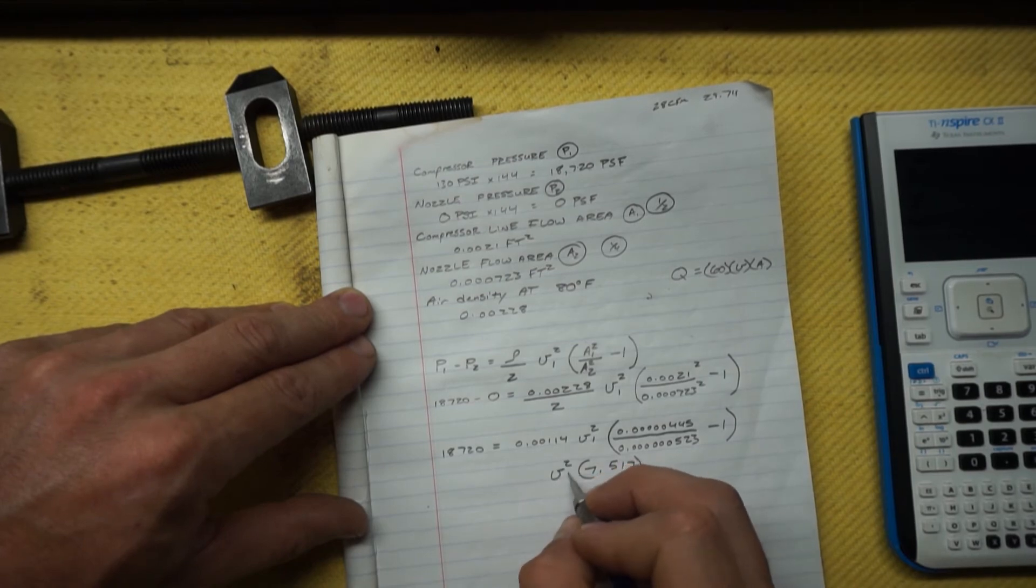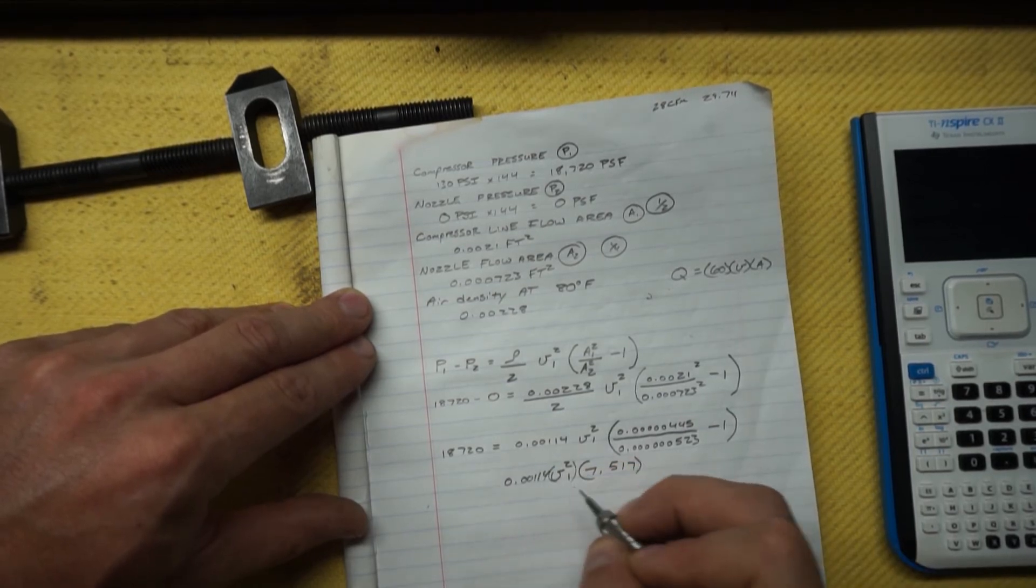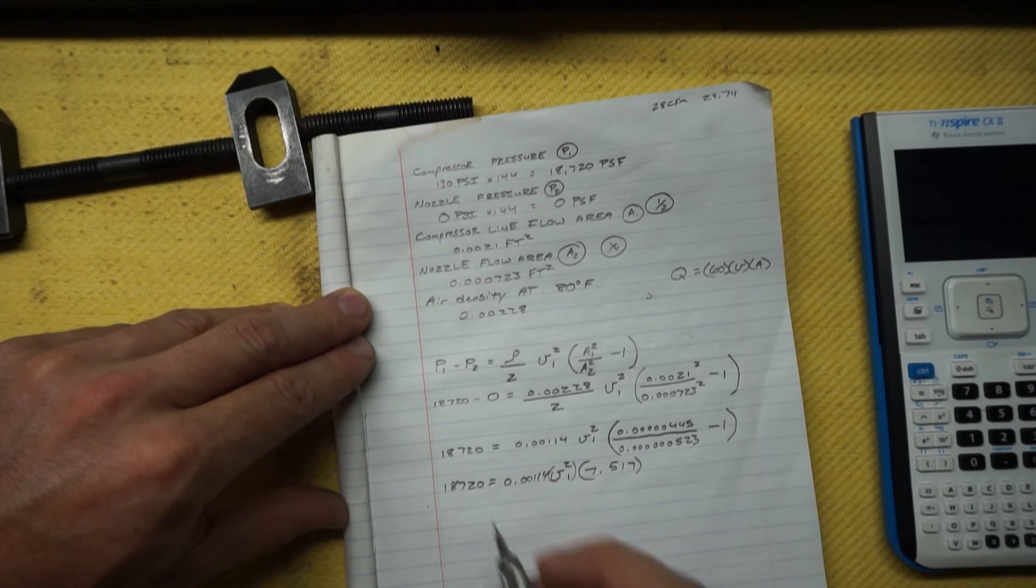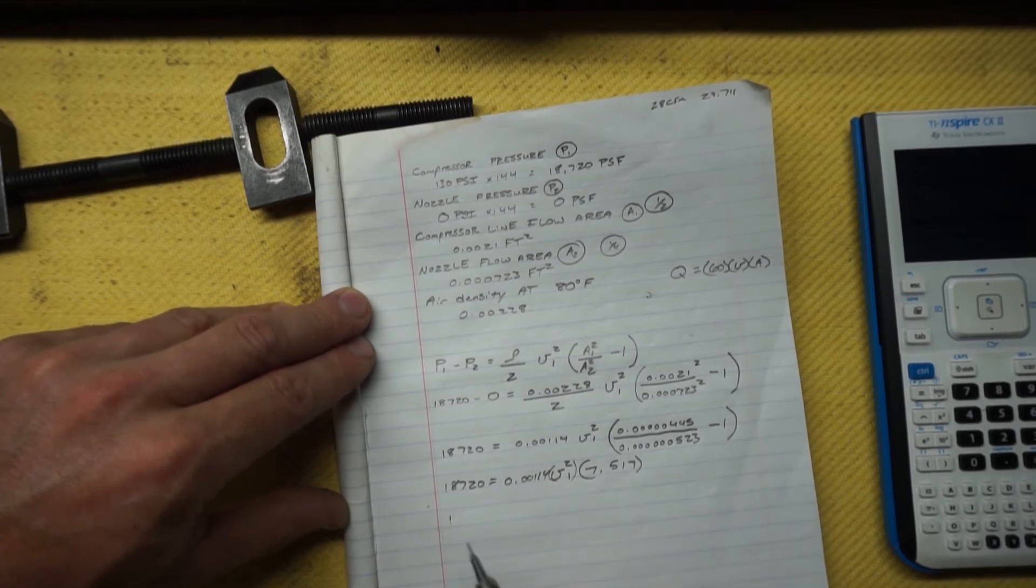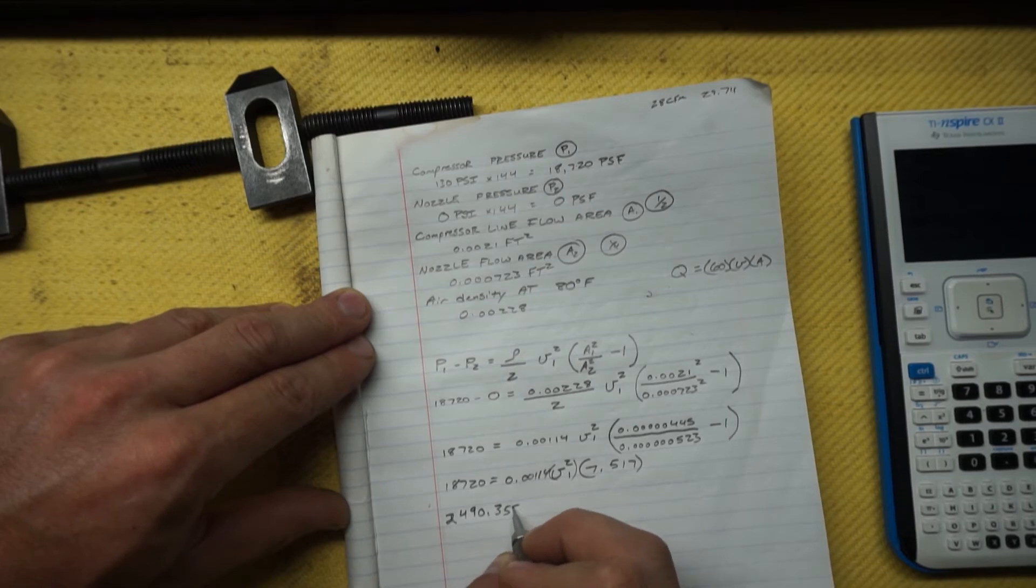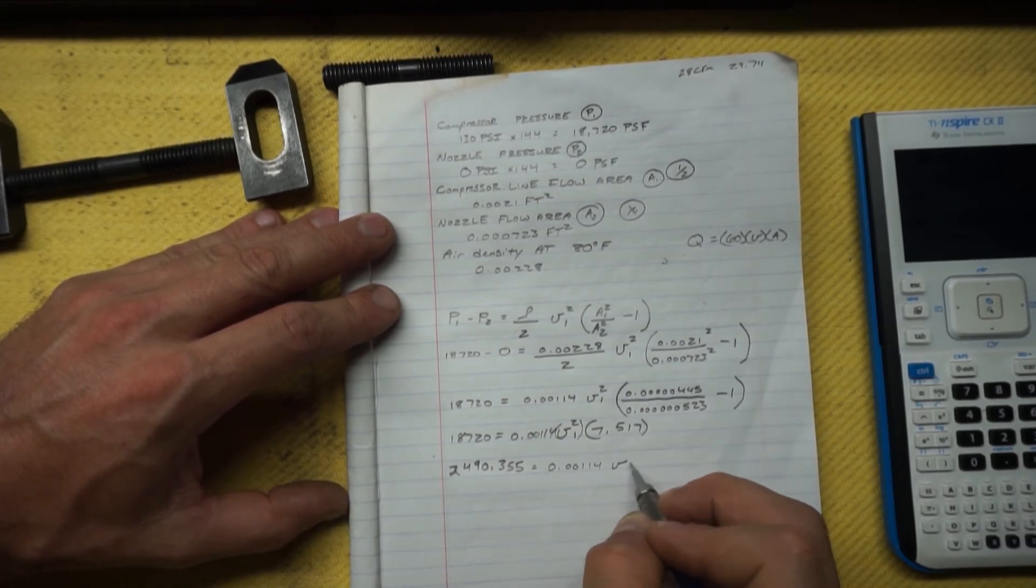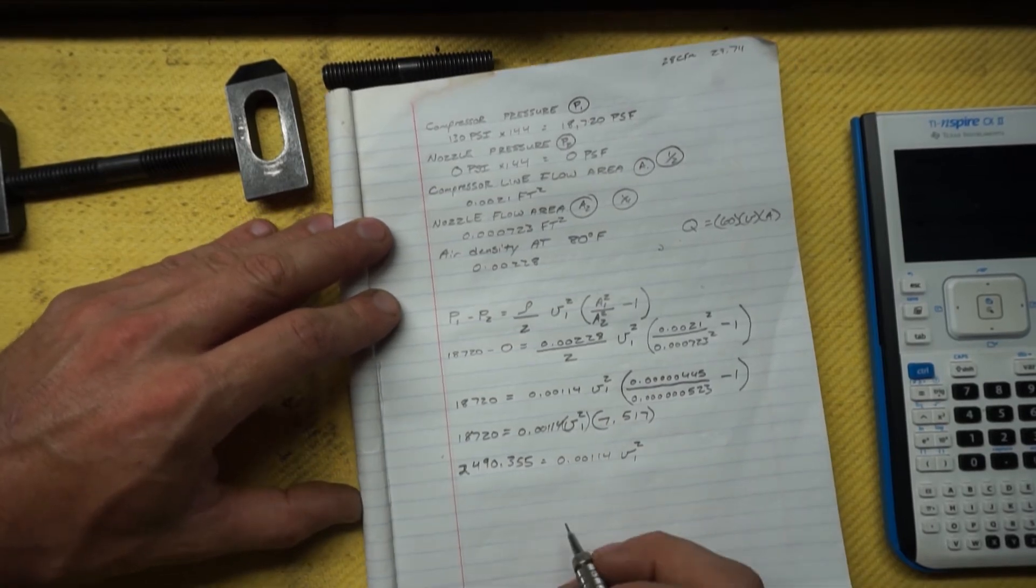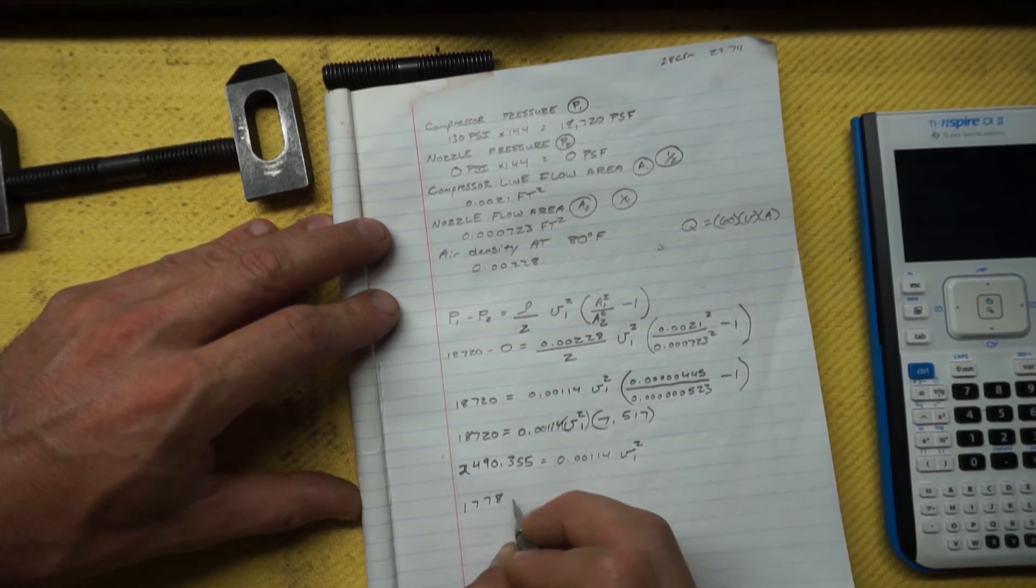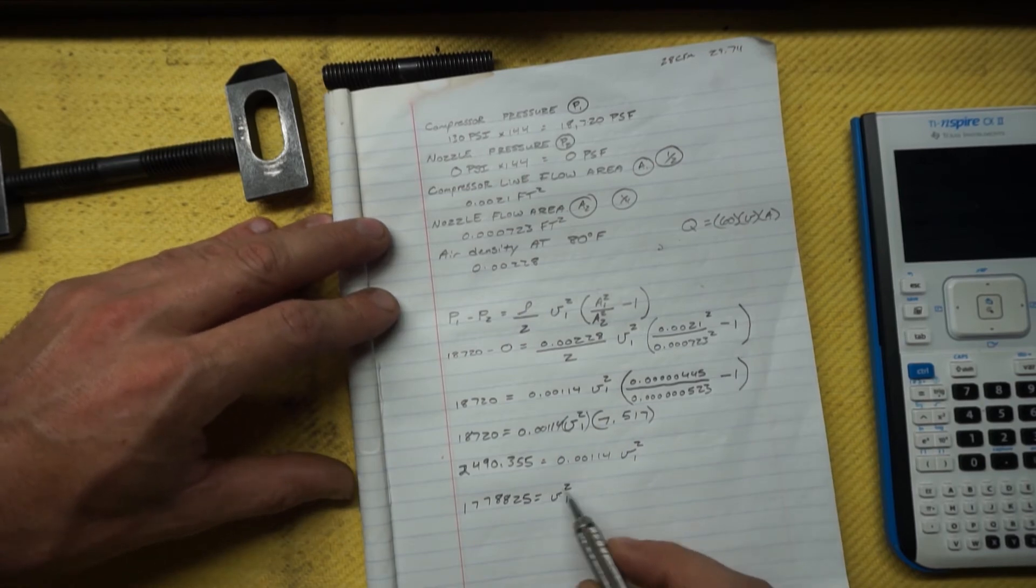This one is going to be 0.00000445, and this one 0.00000523, all minus one. I'm going to compress this math down. I'm going to do all of this in one shot right here, which is going to be 7.517. Leave that in parentheses. Our v squared once again didn't change: 0.00114. 18,720. Now we need to get both of these on this side so it's v squared by itself. So 18,720 divided by the 7.517 is going to be 2490.355. And then on the other side, once again we have 0.00114 v squared one.